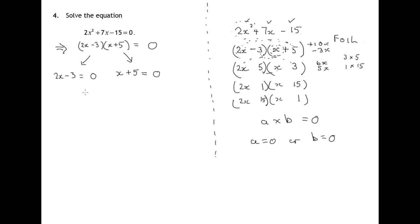So let's tackle 2x minus 3 equals 0. Add 3 to both sides. Divide both sides by 2.